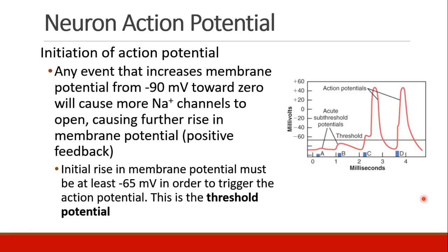So what leads to an action potential? Well, any event that can increase your membrane potential from negative 90 millivolts towards zero will in turn cause more sodium channels to open, and this causes a further rise in membrane potential. It's sort of a positive feedback loop, and it's self-propagating. But you have to cross some sort of a threshold before the action potential snowballs into a full action potential — your initial rise in membrane potential has to be at least about negative 65 millivolts in order to trigger the action potential.